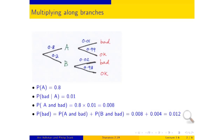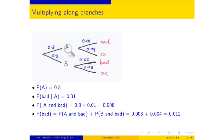Tree diagrams make it easy to calculate probabilities. This sets us up to calculate a kind of conditional probability we haven't computed before — probabilities in chronological order. The thing is produced by the machine; the machine has a certain quality. Given that you know what machine it is, it is straightforward to read off the conditional chance that the object is bad.